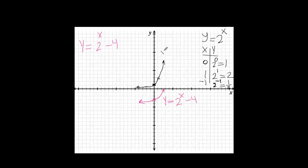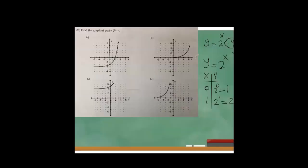That would be the graph of y equals 2 to the power of x minus 4. This shifting method works for any graph — if you add or subtract a number outside the function, you shift the parabola or curve up or down. The graph originally sat at a certain position and we shifted it 4 units down, so graph A is the correct answer.